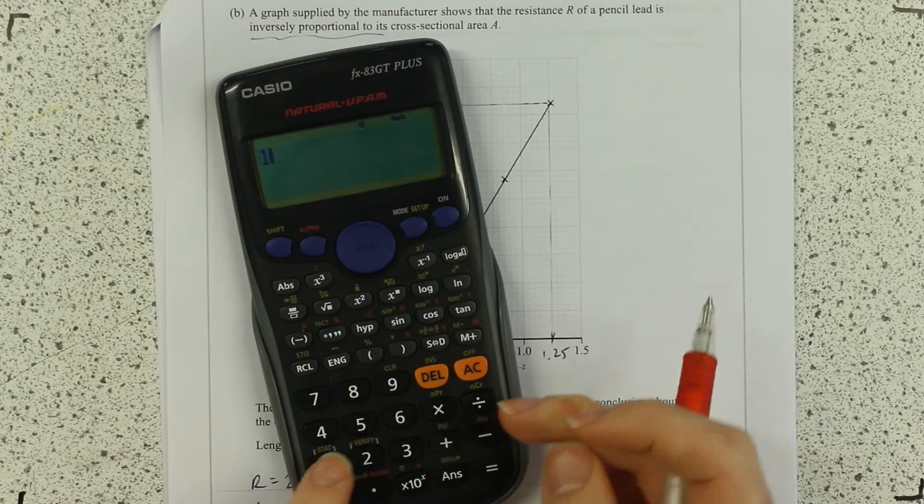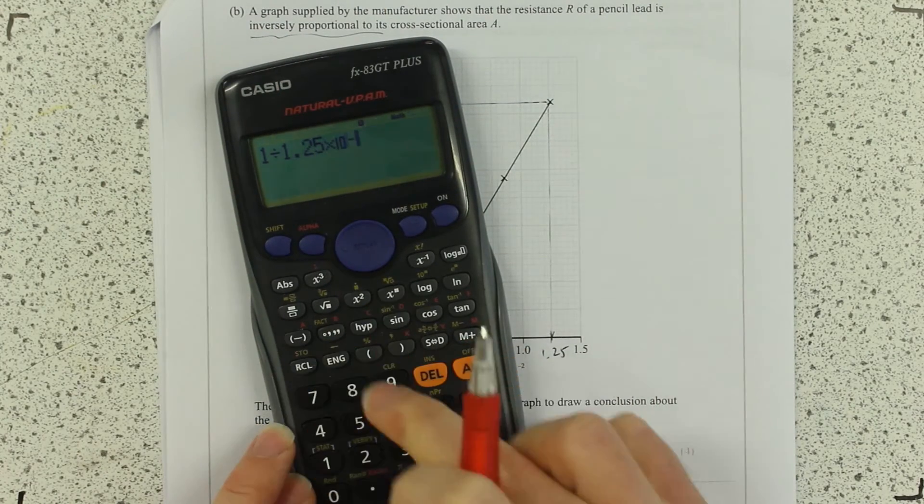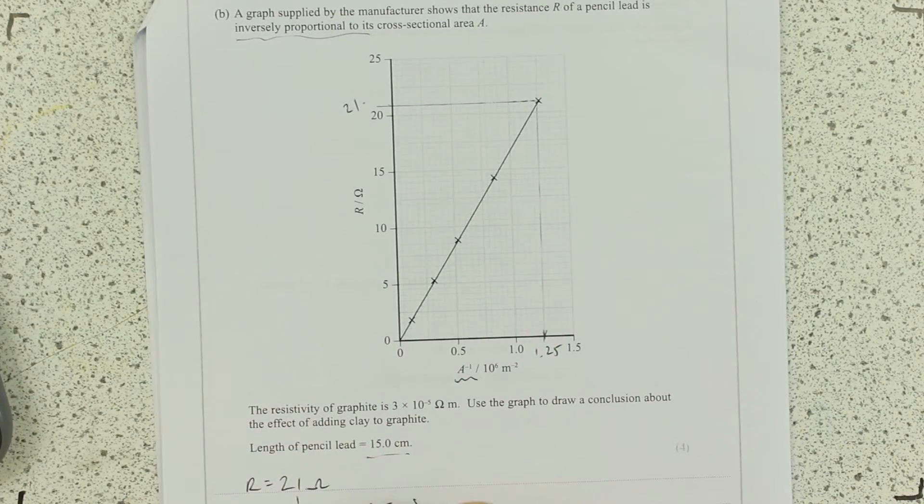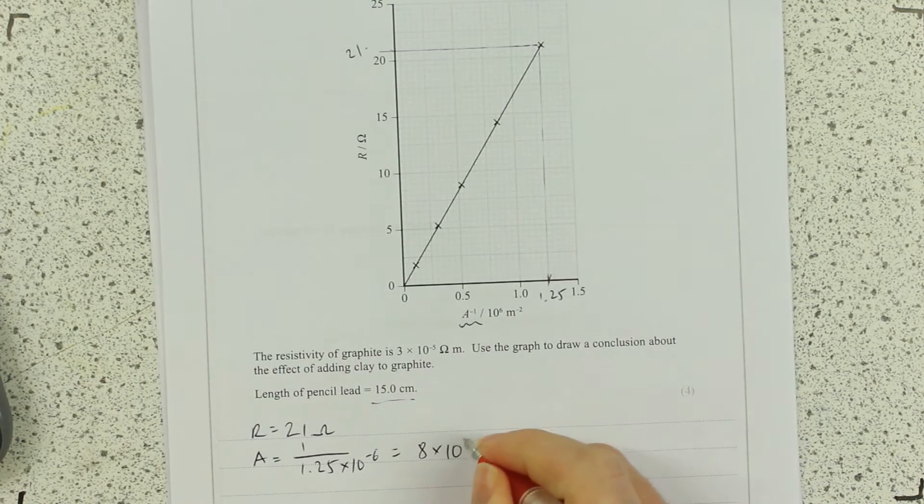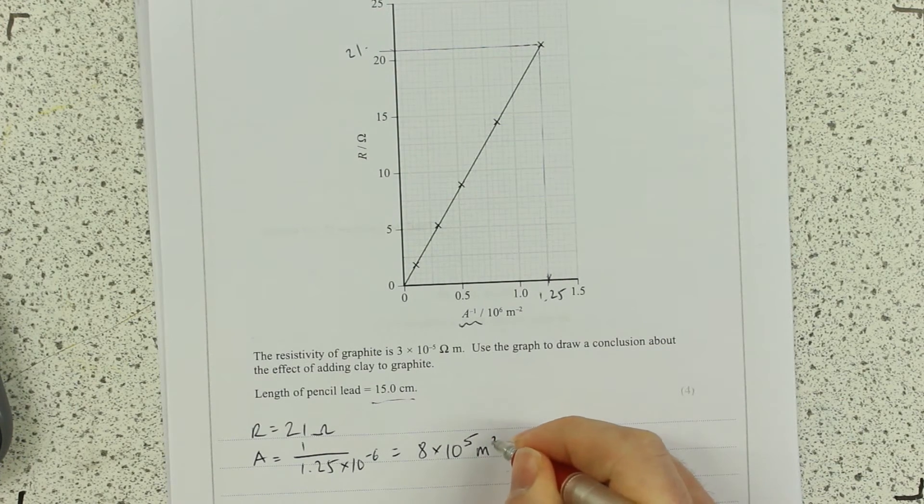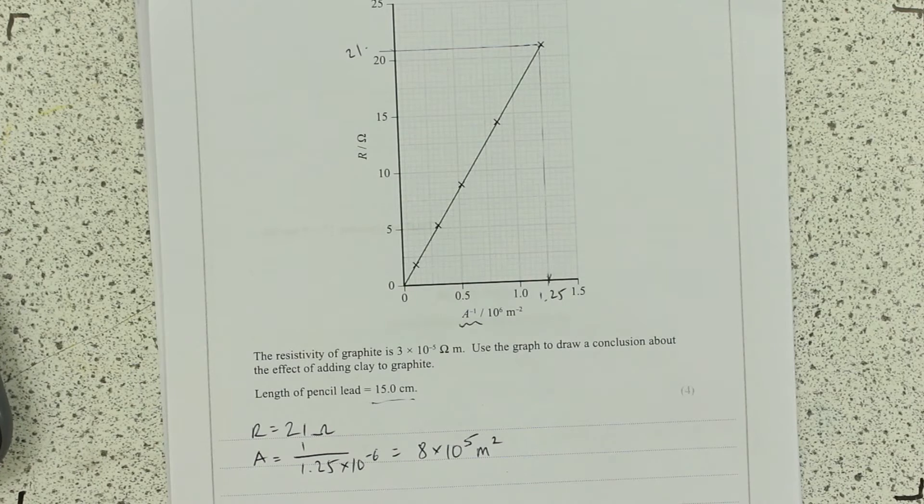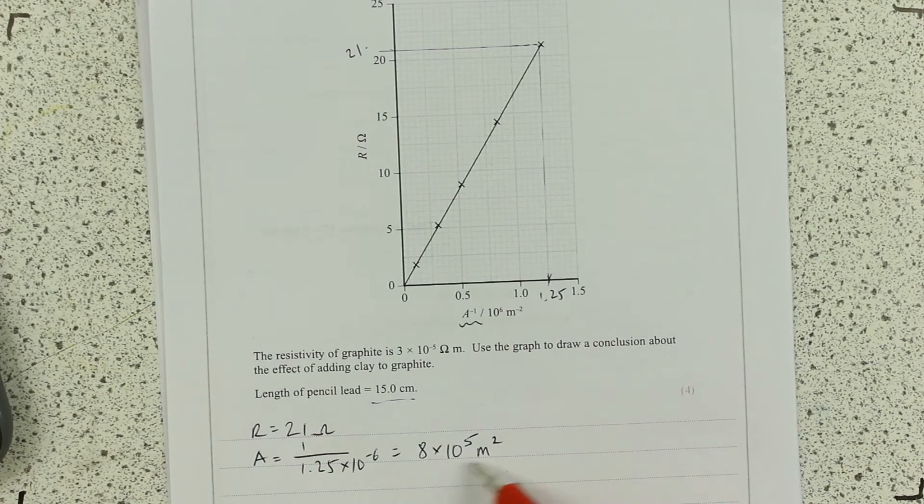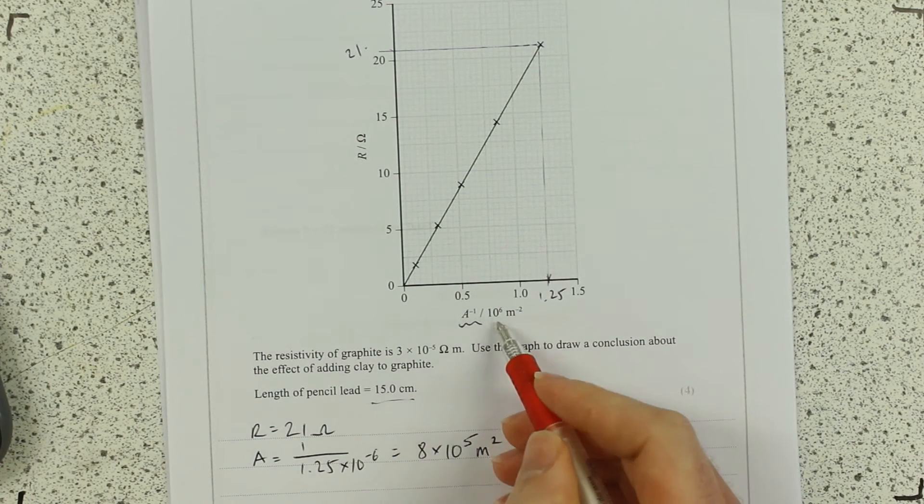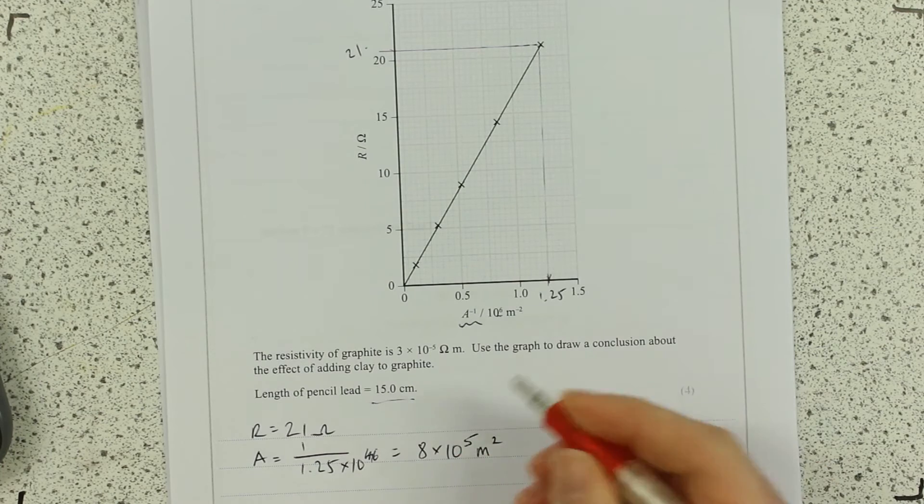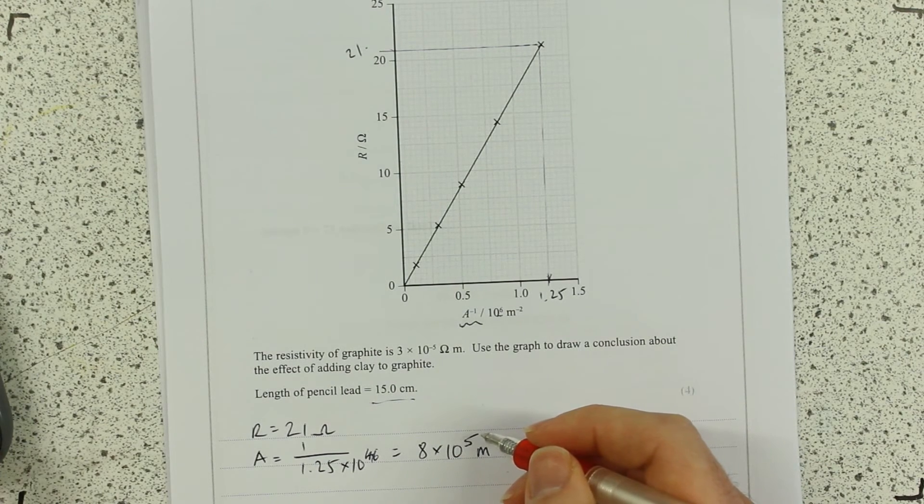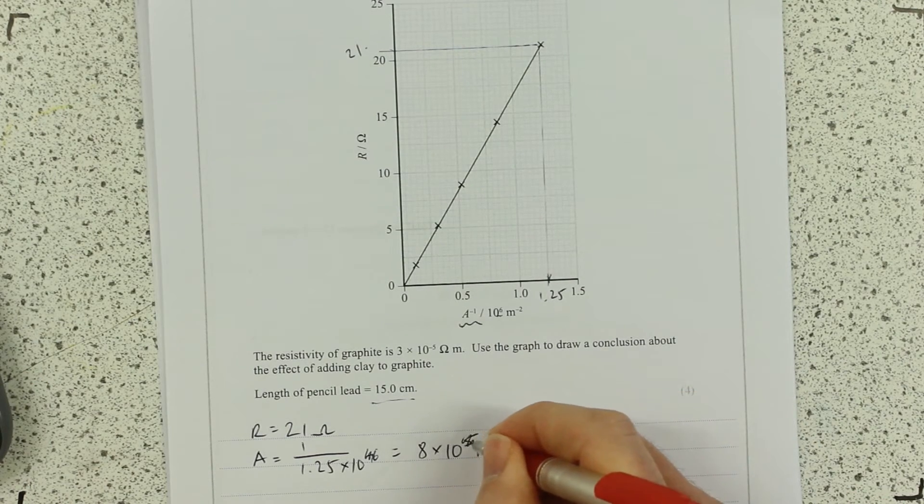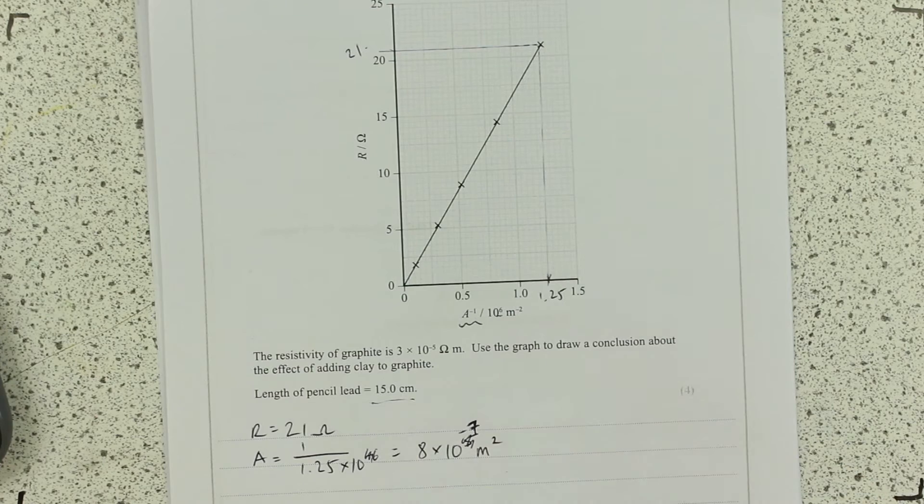And it's going to come out of meters squared. Let's convert that now. 8 times 10 to the minus 6 meters squared. Am I certain about that? That seems ridiculously large. Of course I'm not. Check again. You can do this. 8 times 10 to the minus 7 meters squared. That would have been a massive pencil.